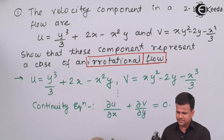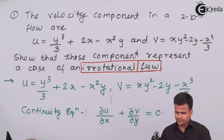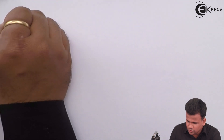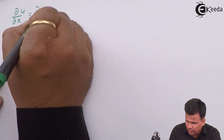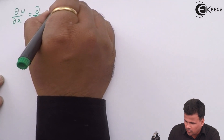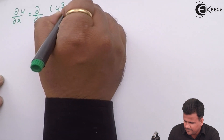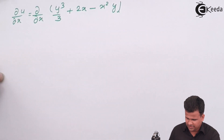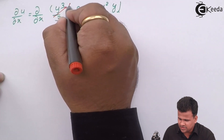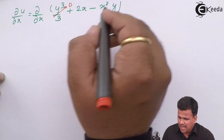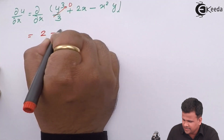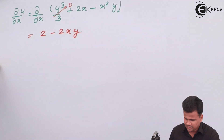Let us differentiate U with respect to X and V with respect to Y. So ∂U/∂x equals ∂/∂x of (Y³/3 plus 2X minus X²Y). If you differentiate, the first part will be 0, this part gives 2, and the third part gives 2XY. So this gives us 2 minus 2XY.